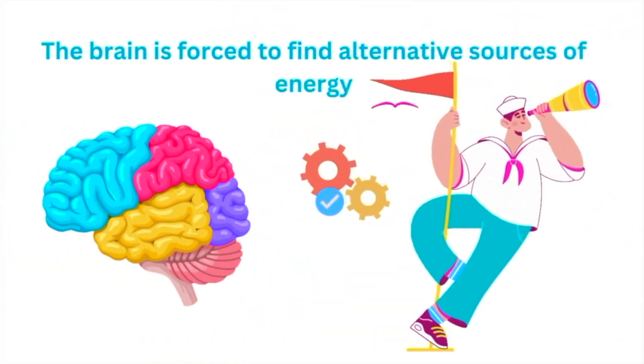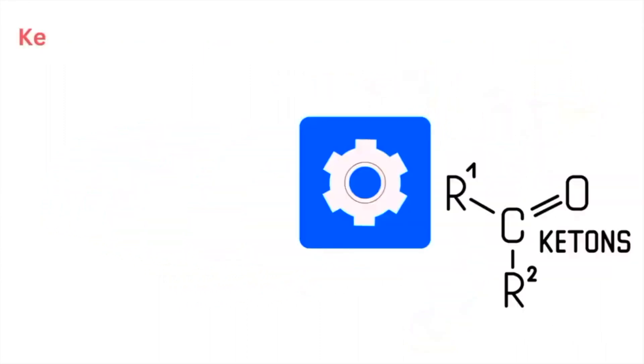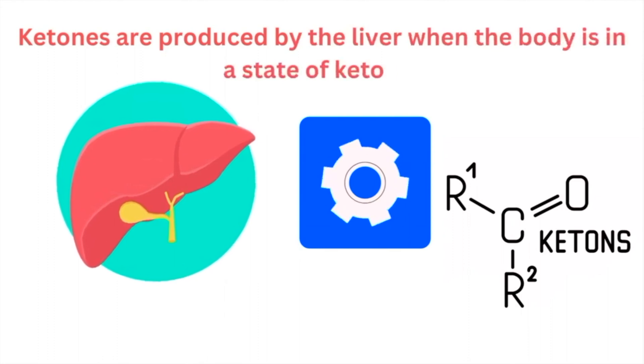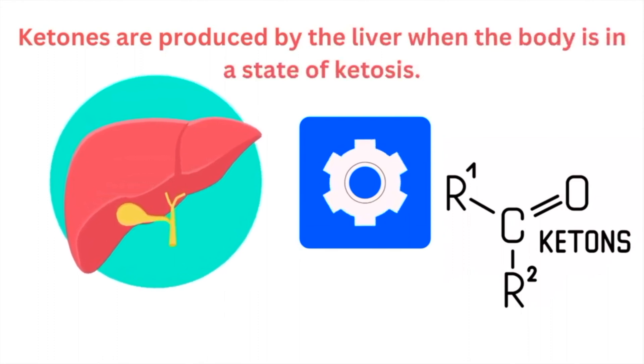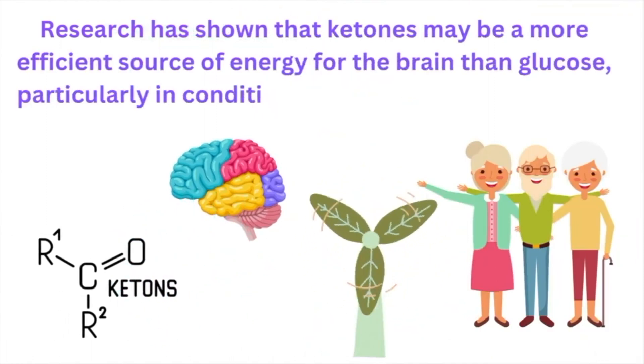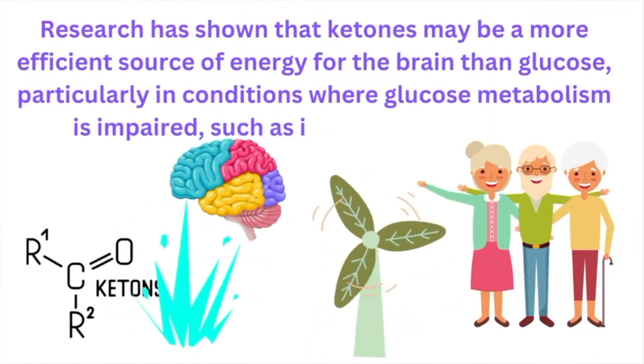One of these sources is ketones, which are produced by the liver when the body is in a state of ketosis. Research has shown that ketones may be a more efficient source of energy for the brain than glucose, particularly in conditions where glucose metabolism is impaired, such as in Alzheimer's disease.